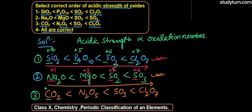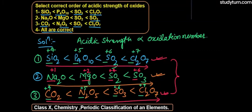Third Option में Carbon के पास +4, Nitrogen के पास +5, Sulfur के पास +6, और Chlorine के पास +7 oxidation number है। Third Option भी correct order में पूरी तरह arranged है। तीनों options increasing order of acidic strength में correctly arranged हैं, मतलब हमारा Fourth Option — all of these — correct option है।